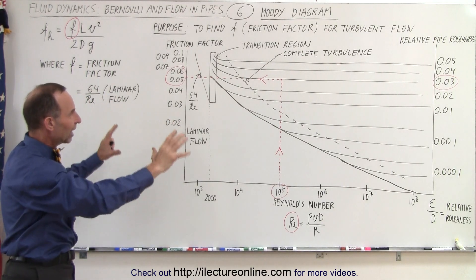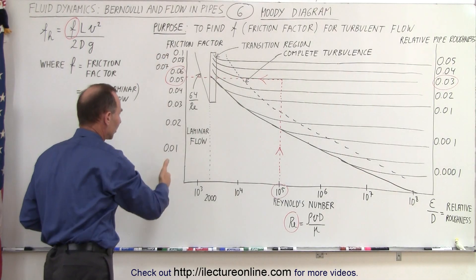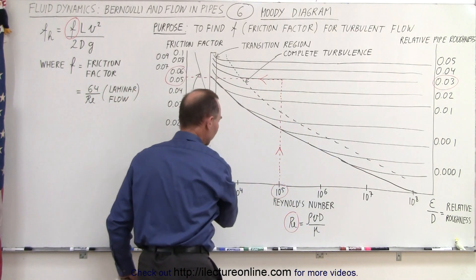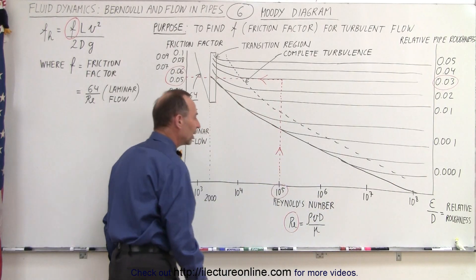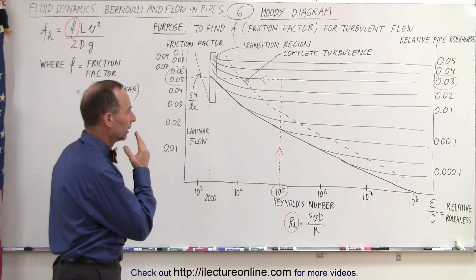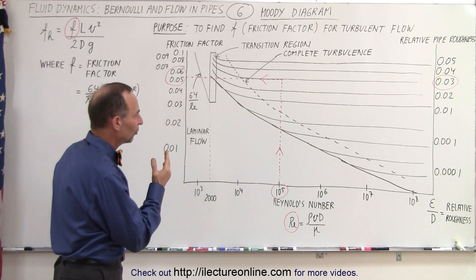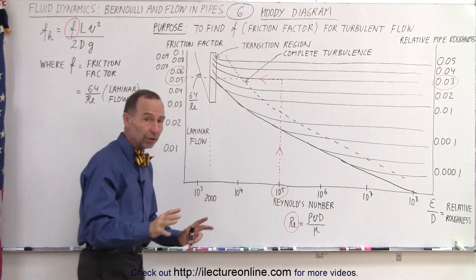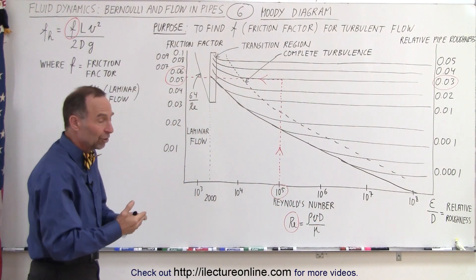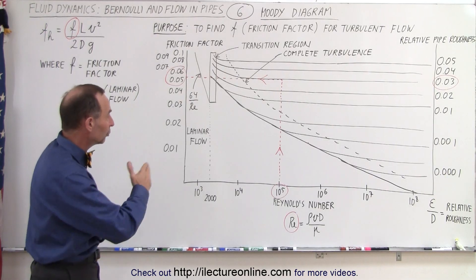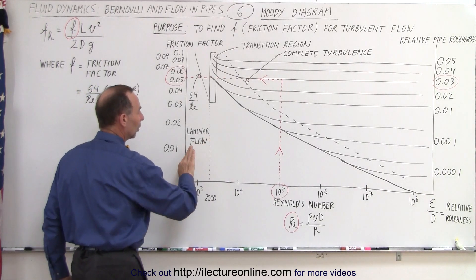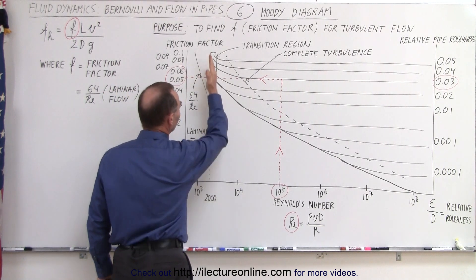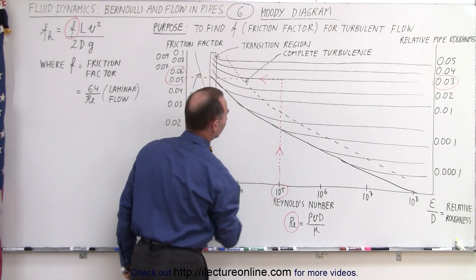On this diagram, on the left side we have the friction factor, on the right side we have the relative pipe roughness, and on the bottom we have the Reynolds number. We start by calculating the Reynolds number, so that would be no different. If the Reynolds number is greater than 2000 — below 2000 we have laminar flow — above 2000 we first have what we call the transition region, and then we have turbulent flow.